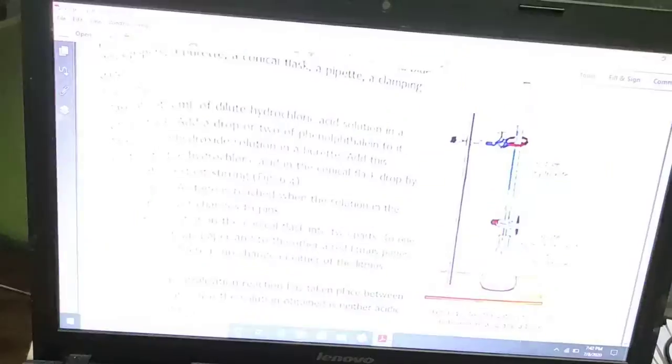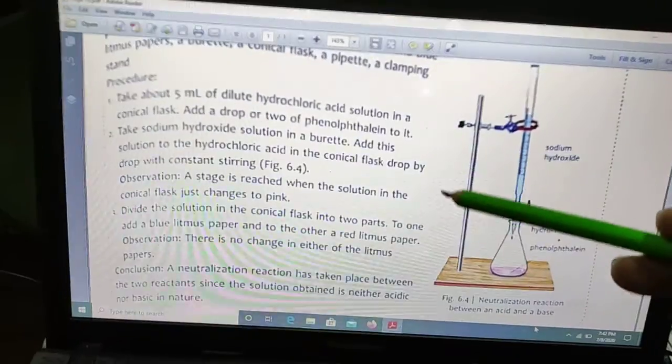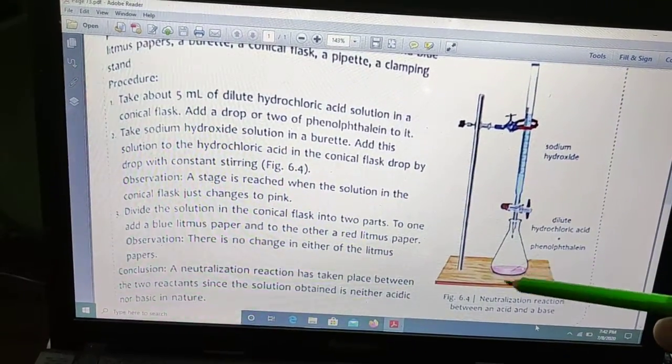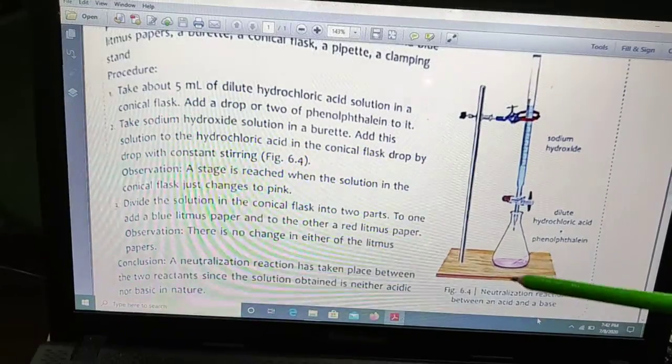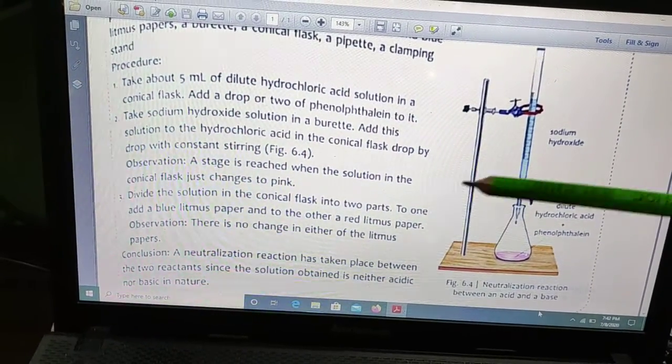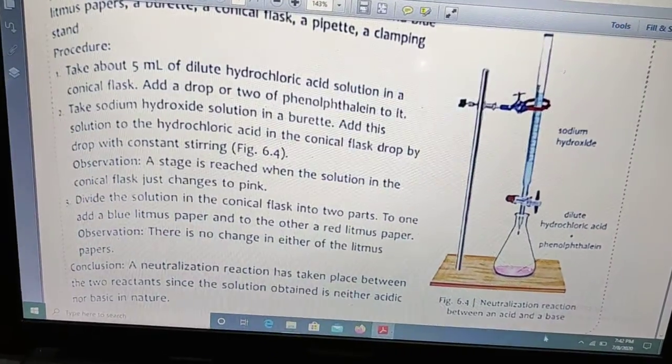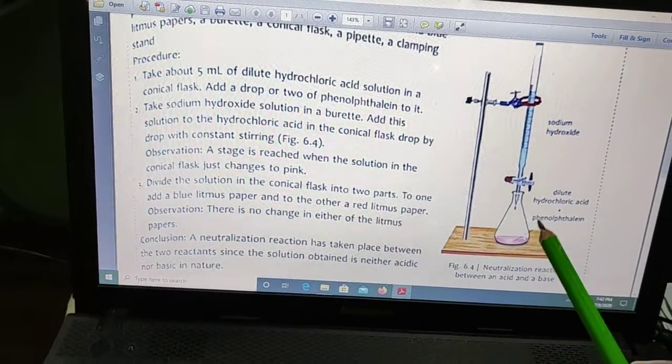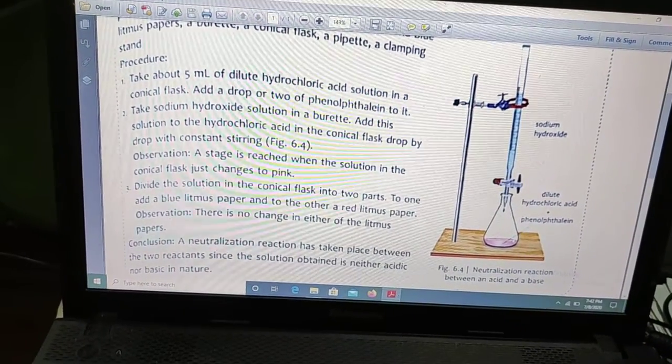That means at that time it has been completely neutralized. This is the procedure as I have explained. In this we have seen that a neutralization reaction has taken place between the two reactants, since the solution obtained is neither acidic or basic in nature. Now when you test that solution which is light pink color, it will be neither acidic nor basic. You can check with the litmus paper.